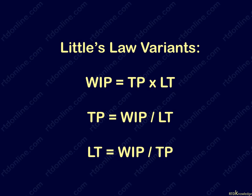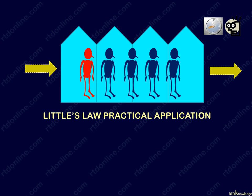Let's see the other variants of Little's Law. From the formula — work in process equals throughput rate times lead time — we can derive the following: throughput equals work in process divided by lead time, and lead time equals work in process divided by throughput. By knowing any two variables, we can always figure out the third.